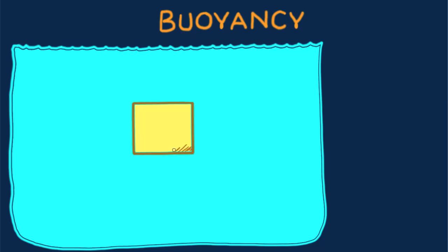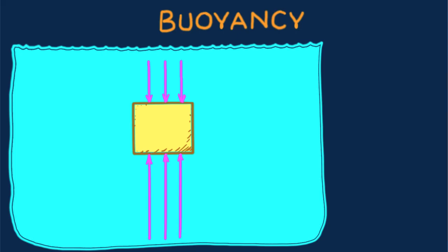To understand buoyant force, consider this solid block beneath the surface of a body of water. We draw sample force vectors showing the forces that water exerts on the block. Although water pressure has no preferred direction, forces due to pressure act at right angles to the surface. Notice the vectors are greater against the bottom of the block. Why? Because water pressure is greater there — simply because the bottom of the block is deeper. Water pressure depends on depth.